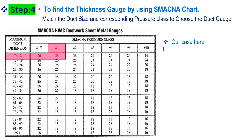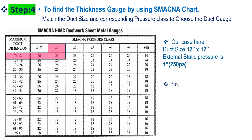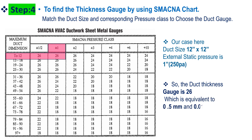In our case, the duct size is 12 x 12 inches and the external static pressure is 1 inch or 250 pascal. So the duct thickness gauge is 26, which is equivalent to 0.5 millimeters or 0.018 inches.